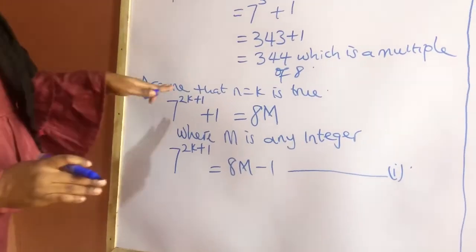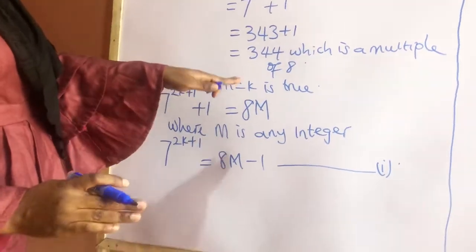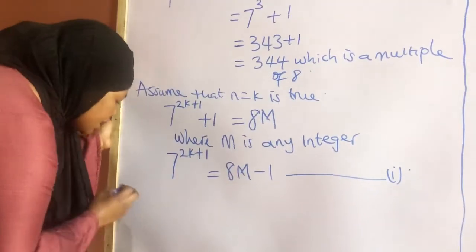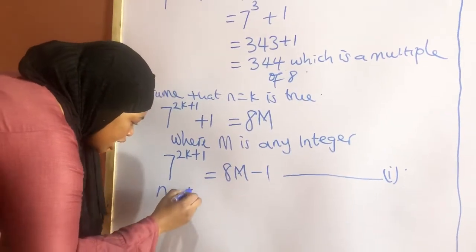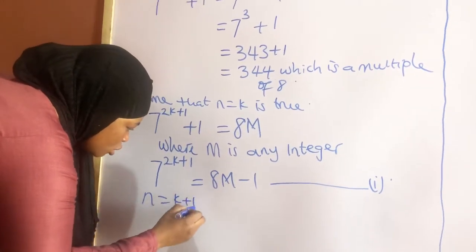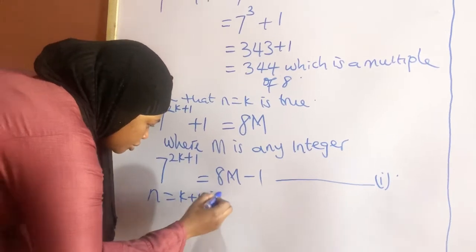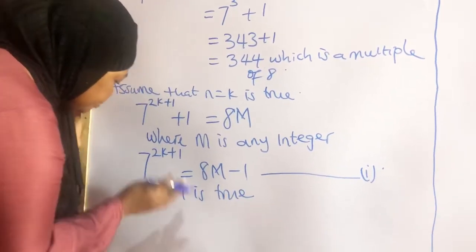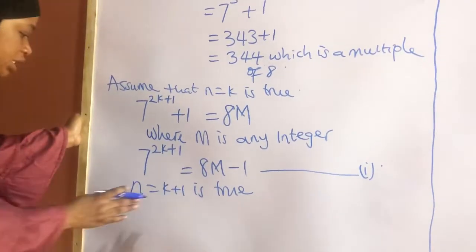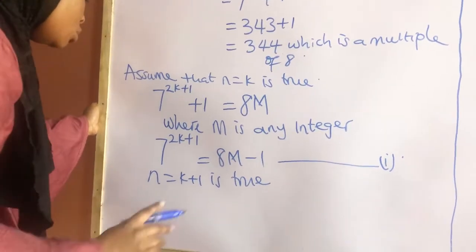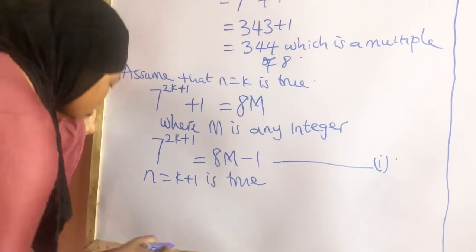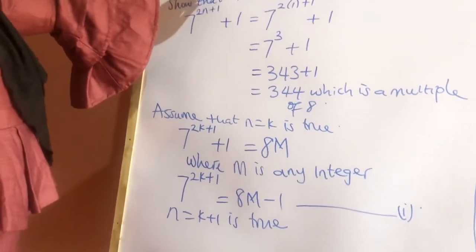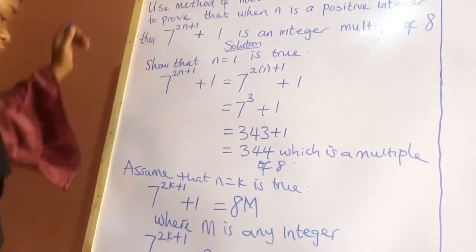Now that we know n equals k is true, we need to show that n equals k plus 1 is also true. Wherever we see n in the expression, we are going to put k plus 1.